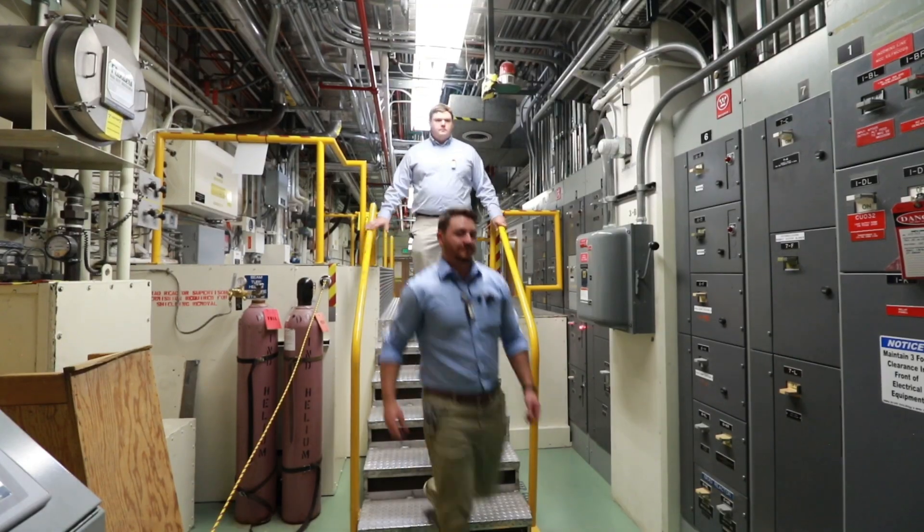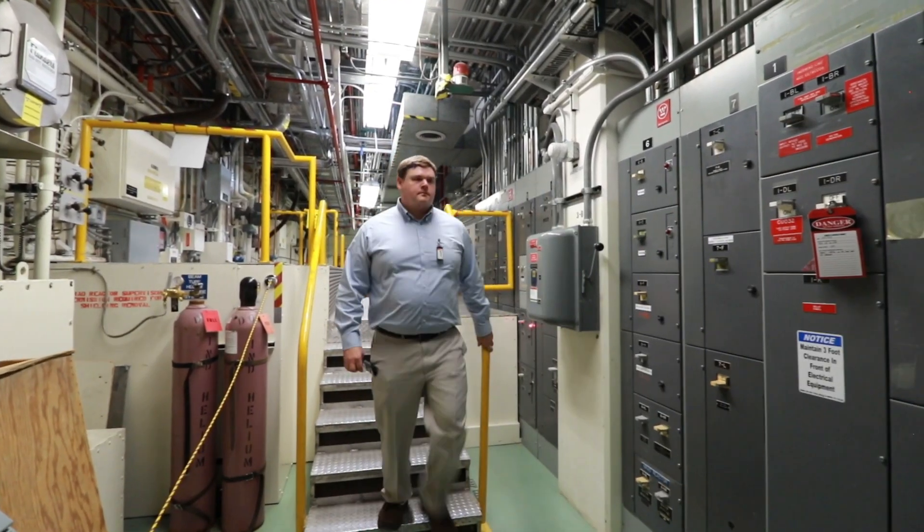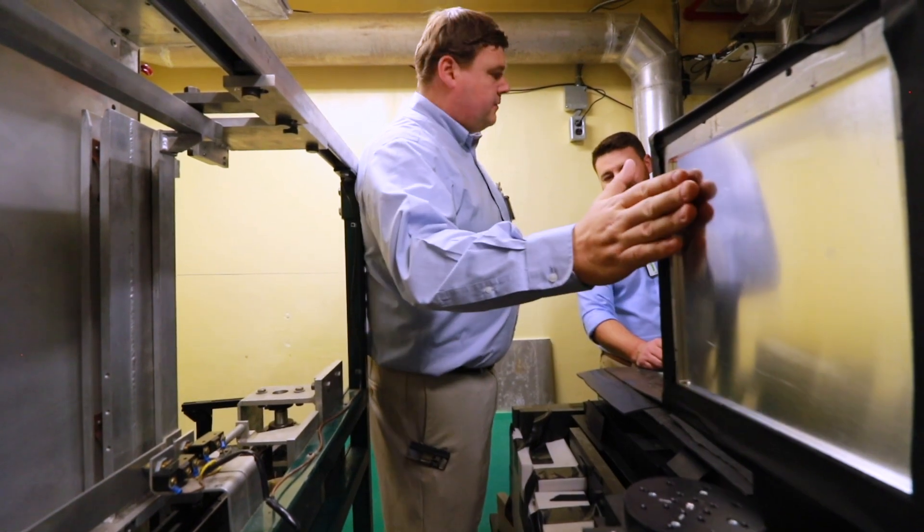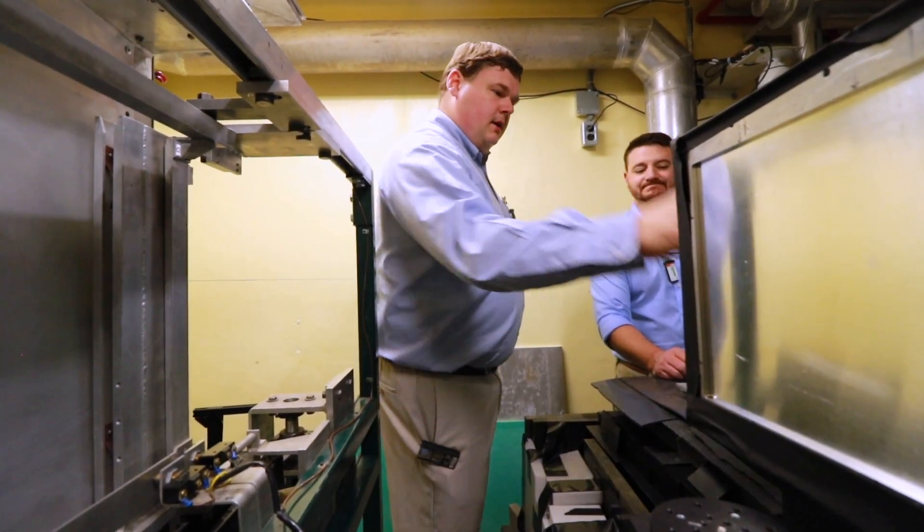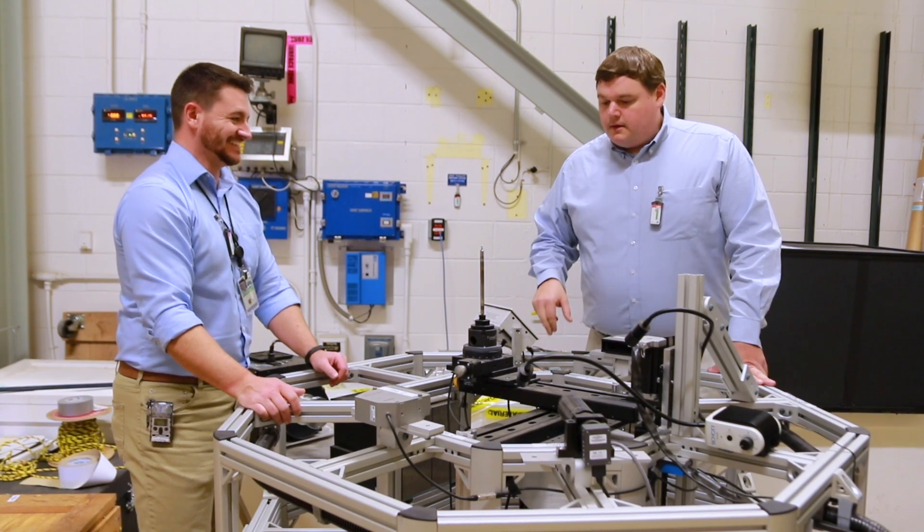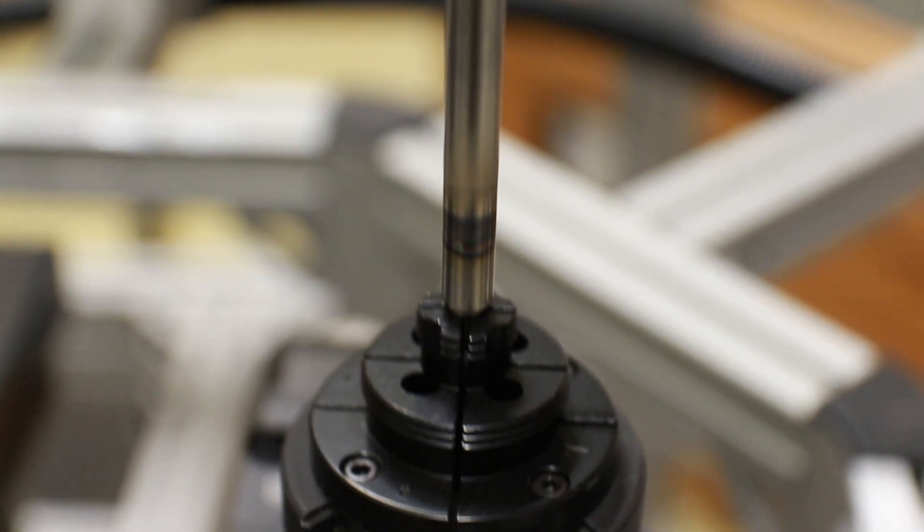The process starts when we manufacture a nuclear fuel here or bring fuel in from somewhere else. We then insert it in one of our reactors for radiation testing. After irradiation, we bring it into the materials and fuels complex to characterize the fuel, first with non-destructive testing then destructive testing to understand both engineering scale and microstructural all the way down to atomistic effects.